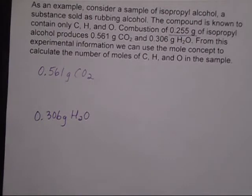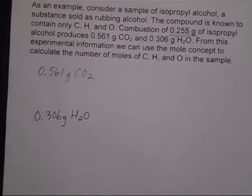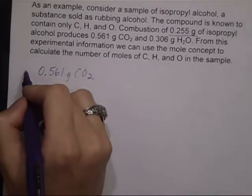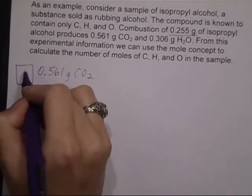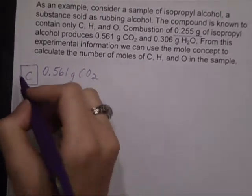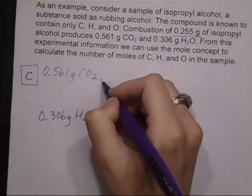Since our substance has carbon, hydrogen, and oxygen in it, we need to take those apart, figure out how much carbon, figure out how much hydrogen, and then figure out how much oxygen. All right, so the way we do this is to figure out the carbon, we have to get the carbon out of the CO2.